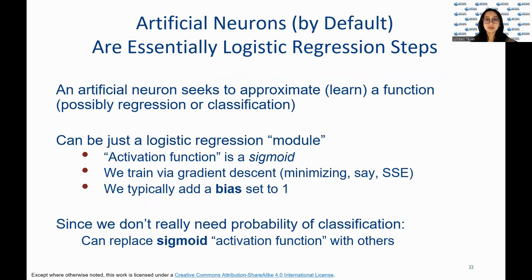Now we address the concept of artificial neurons, which seek to approximate a function through regression or classification. Artificial neurons can be thought of as logistic regression modules with a sigmoid activation function and trained via gradient descent to minimize the sum of squared error. A bias term is typically added and set to 1. The sigmoid activation function can be replaced with other activation functions if we do not need the probability of classification. And artificial neurons are a fundamental building block of neural networks and can be combined to form more complex models.